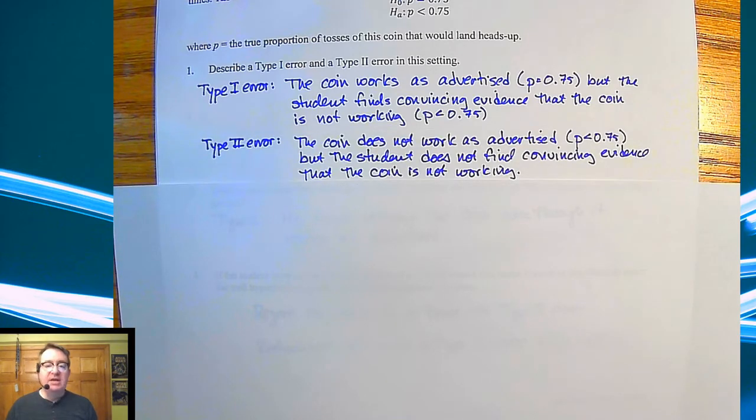Type II error: the coin does not work as advertised, so P is actually less than 75%, but the student doesn't find convincing evidence of that. And it says what I'm seeing might happen 12% of the time, 15% of the time, purely by chance.